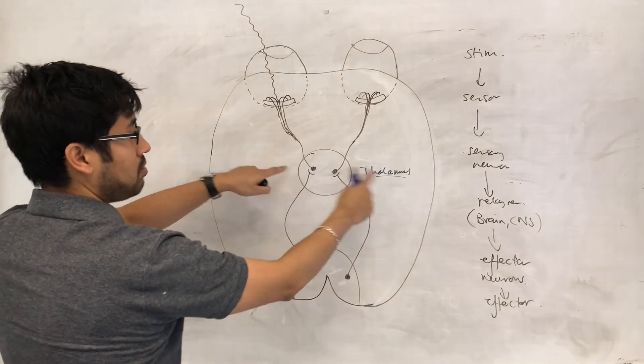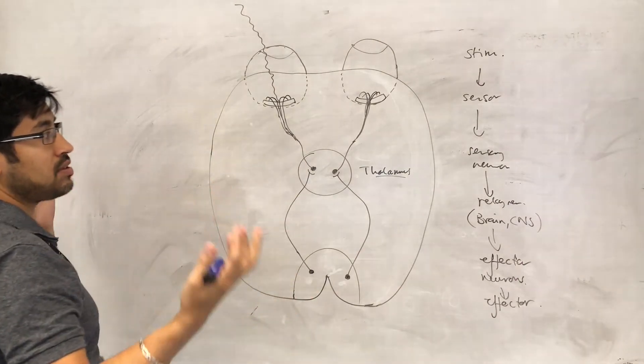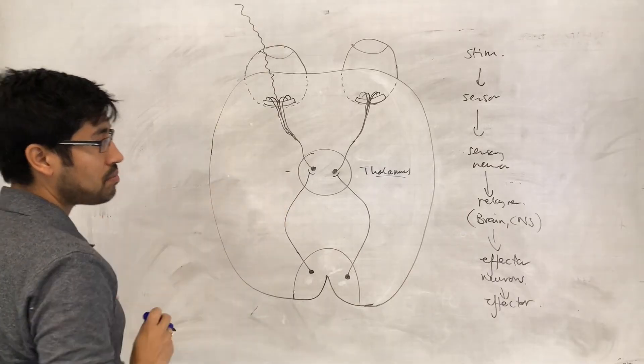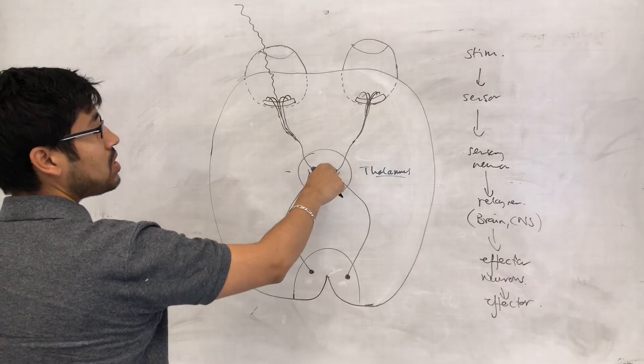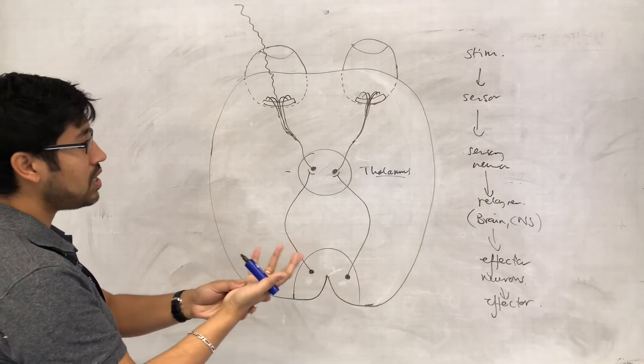So that happens here, right? And there might be, I don't know, olfactory information, smell information, that then goes to the appropriate center that processes smells. There might be pressure information that goes to the center that processes pressure information, touching and feeling things.